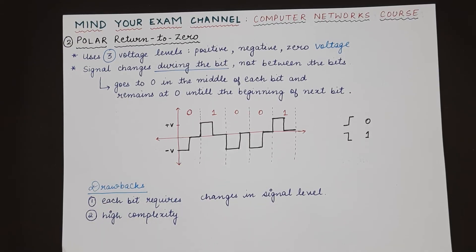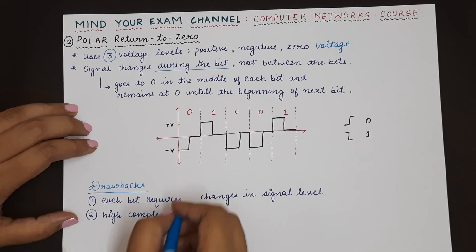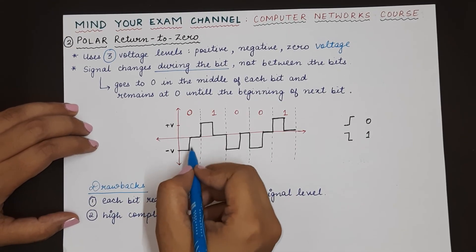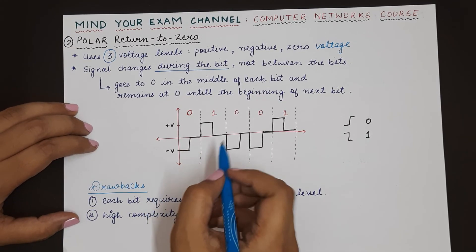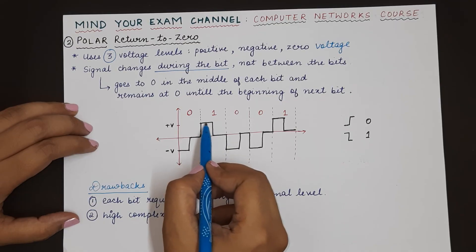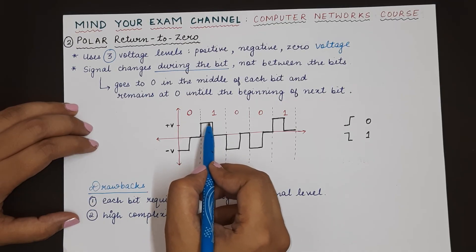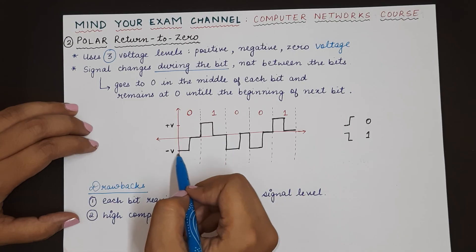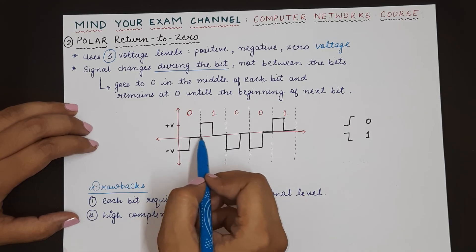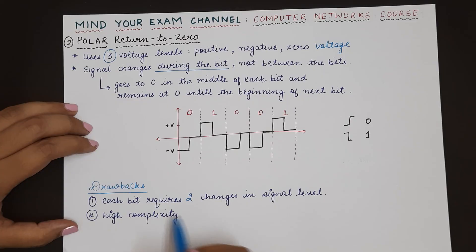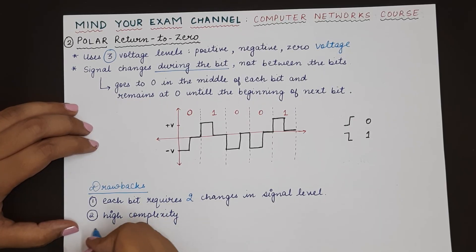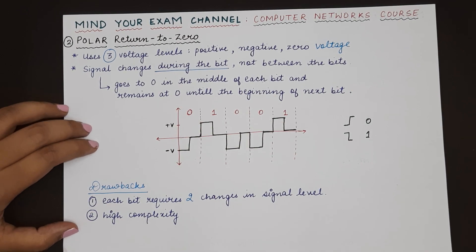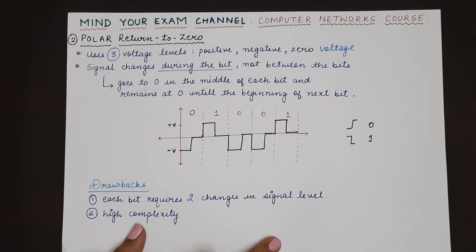The drawback of polar RZ is that each bit requires two signal level changes — either a positive level and a 0 level, or a negative voltage level and a 0 level. Due to these multiple levels, the complexity of this scheme increases and it becomes difficult to implement. So that was all for polar RZ.